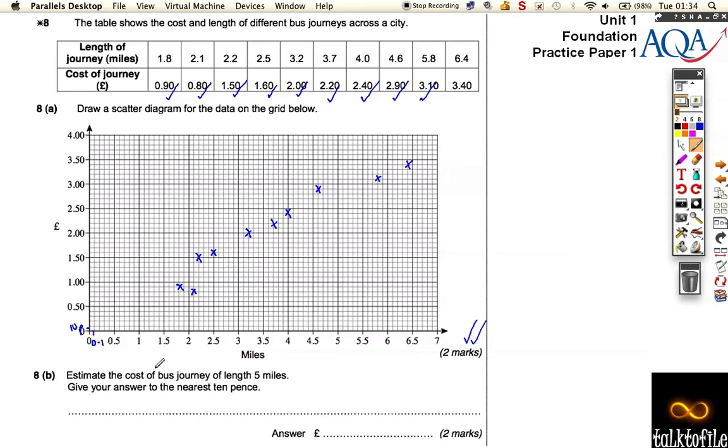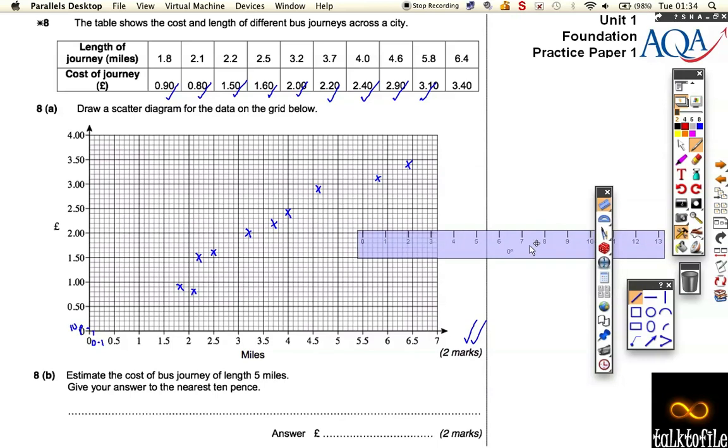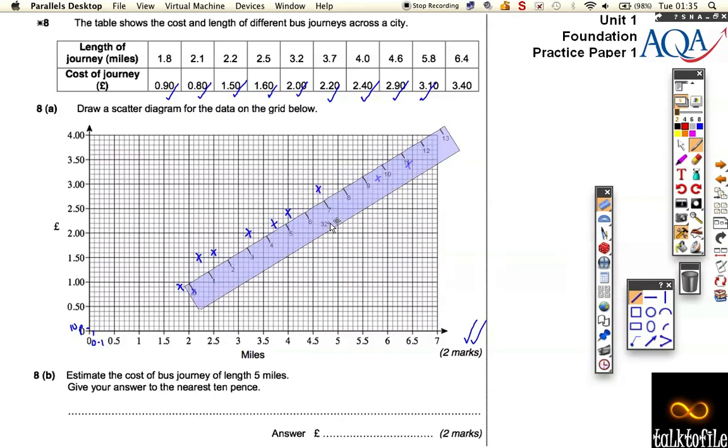Now we've got to do this thing which says, estimate the cost of a bus journey of length 5 miles. So we're going to go up at 5 miles, and kind of guess where most information is, and then go across. So the best way to do that is actually to draw some kind of line of best fit. If you just get your ruler, and you basically need to kind of twizzle your ruler around, and kind of line it up. It takes a little bit of doing, and you want to try and split the points. So I reckon something about there.